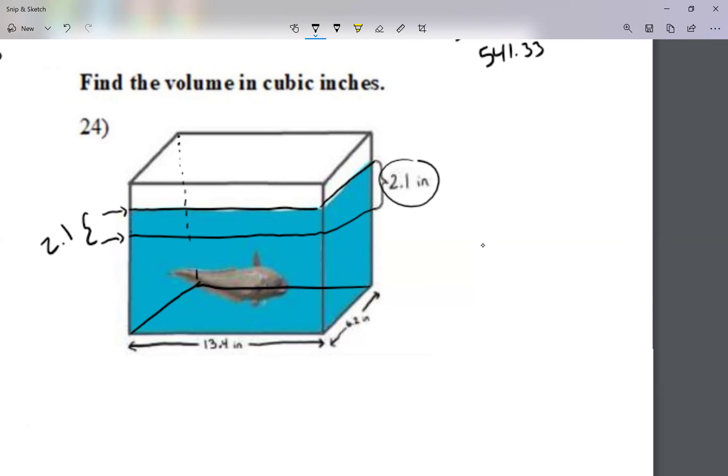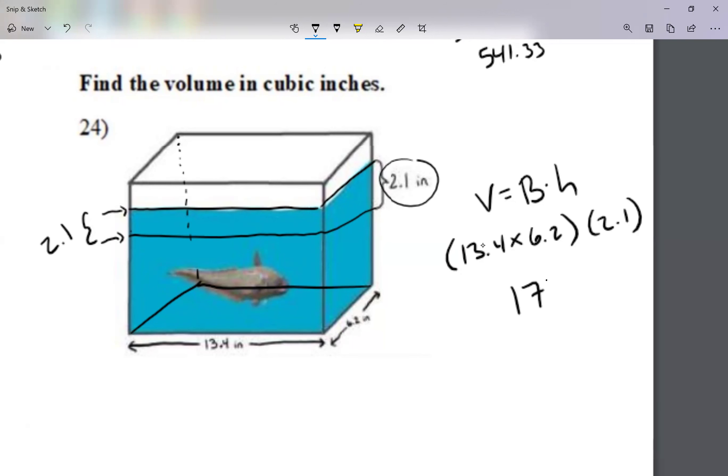Well, doesn't that look like a small prism? I remember for the prism, the difference of the water here, it looks like a prism. And I remember the volume of a prism is the area of the base times the height. So in this case I'm going to go: the base is 13.4 times 6.2, the height in this case is 2.1. So I have to go area of the base times the height, which happens to give me 174.468 cubic inches.